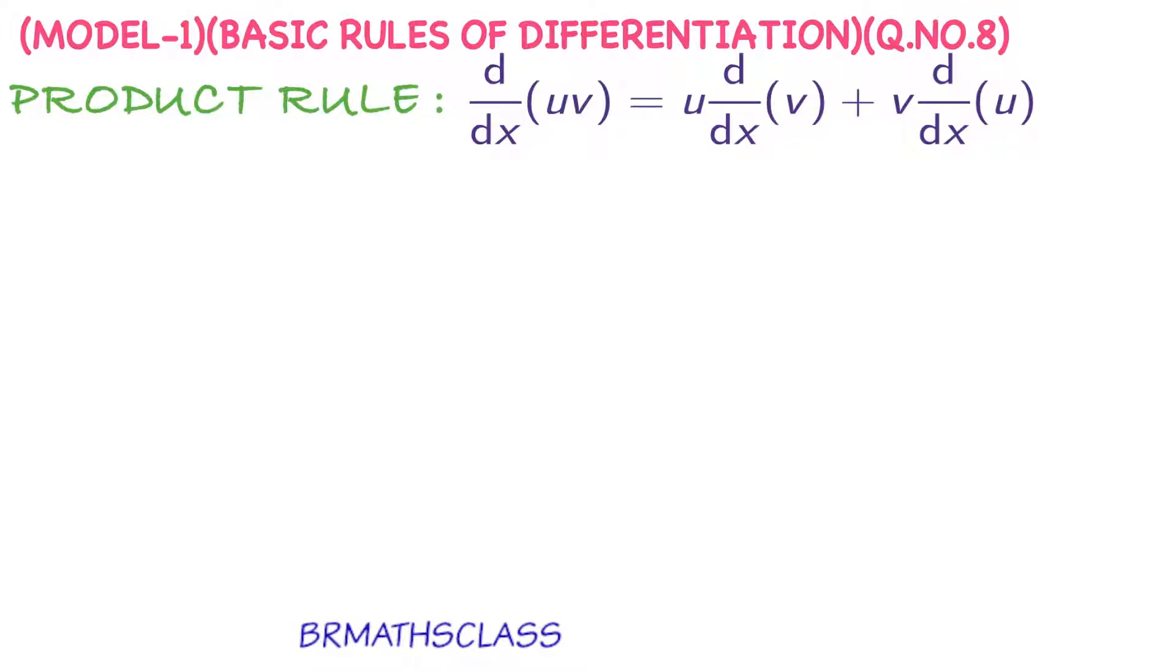What is product rule? Derivative of uv - u into v, product of two functions. Derivative of uv is u into derivative of v plus v into derivative of u. Now we are going to do a problem based on this formula.